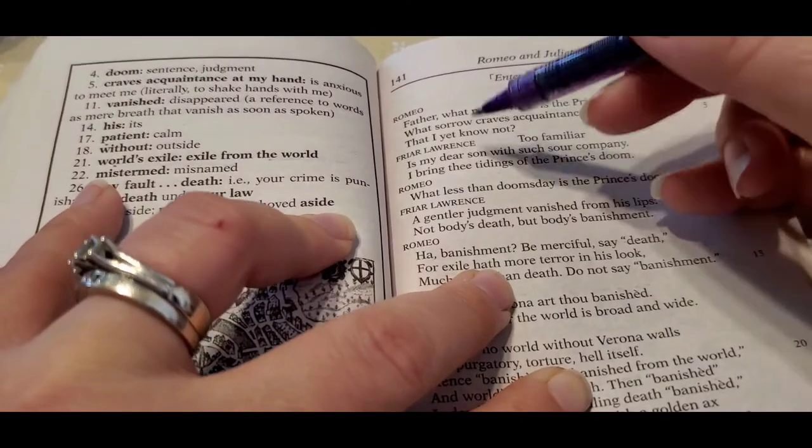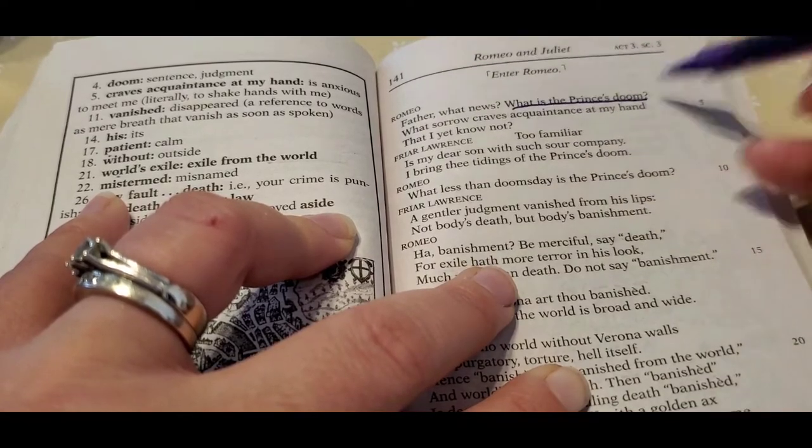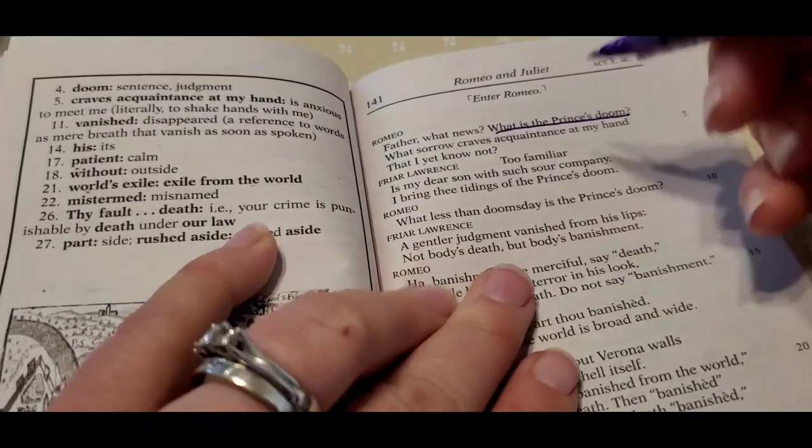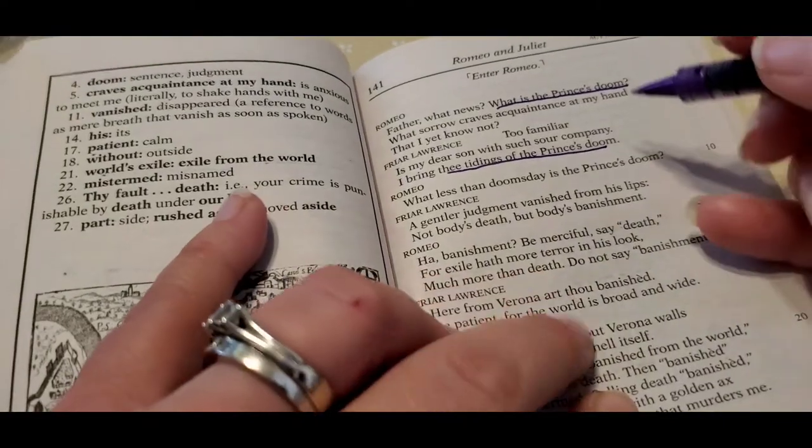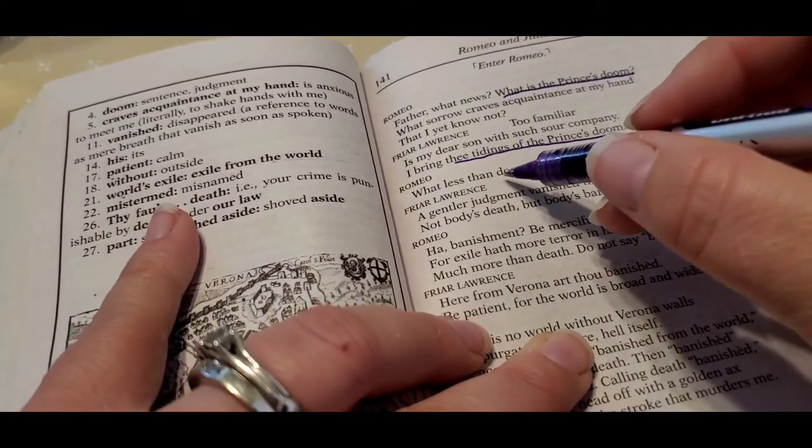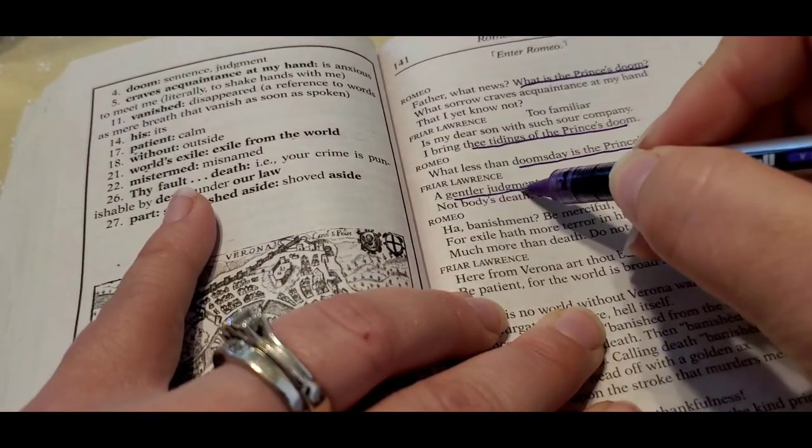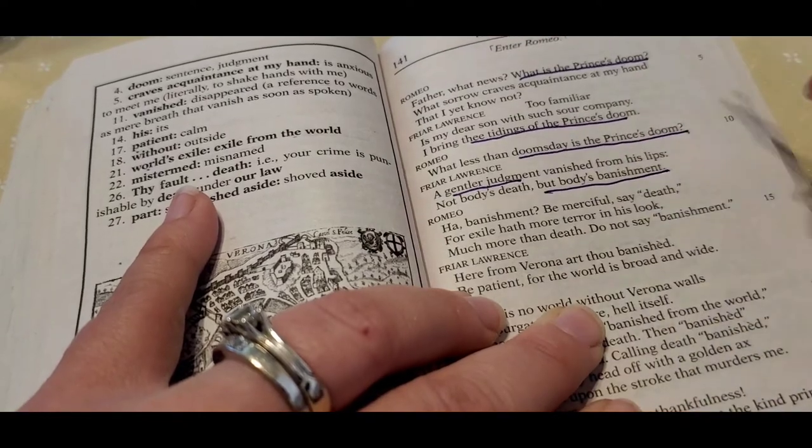So she says, Romeo come forth thou fearful man. Affliction is enamored and you are wedded to calamity. You are married to problems. And then Romeo comes in and he says, well, you know what news? What's the Prince's doom? Cause remember at this point he thinks he's dead. He peaced out before the Prince said that he should be banished. And he says, you know, I bring you tidings of the Prince's doom. What less than doomsday is the Prince's doom meaning death. And he says a gentler judgment vanished from his lips, not body's death, but body's banishment, meaning you're banished.